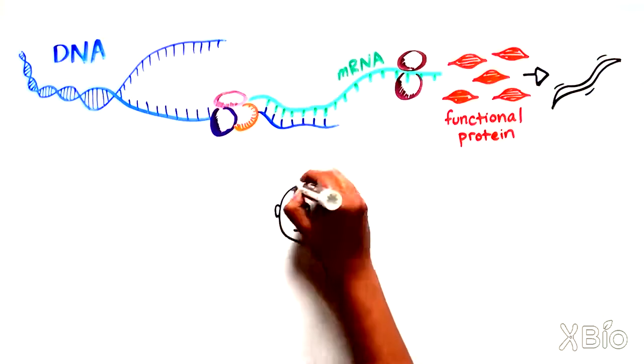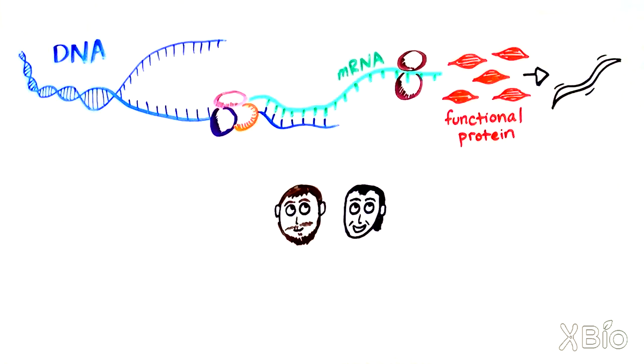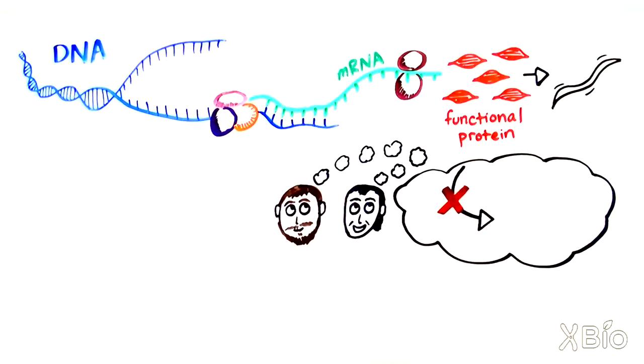So, doctors Fire and Mello decided to see if introducing various forms of RNA sequences that matched an RNA responsible for a worm muscle protein would block production of that protein and result in the twitching behavior.